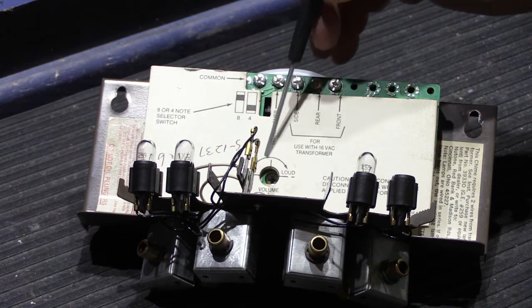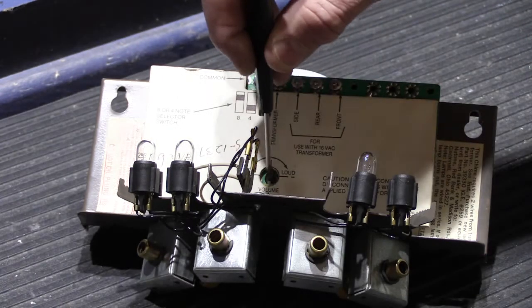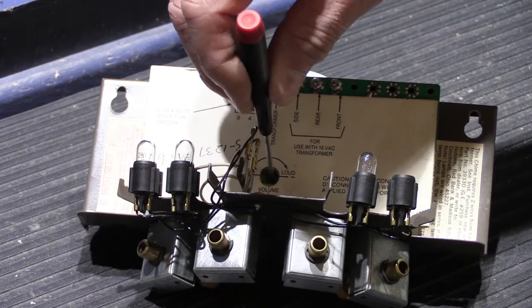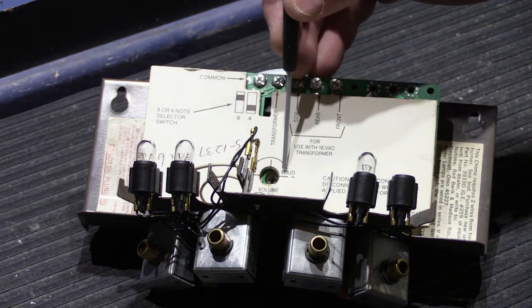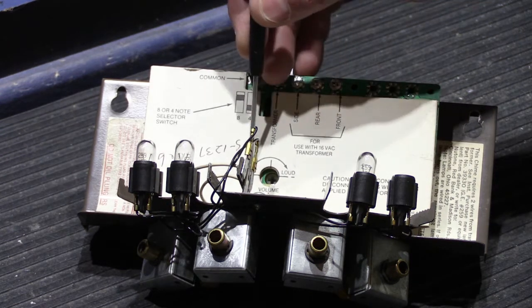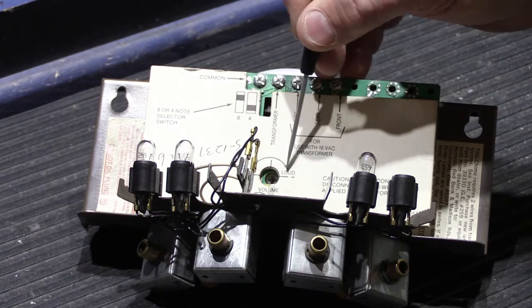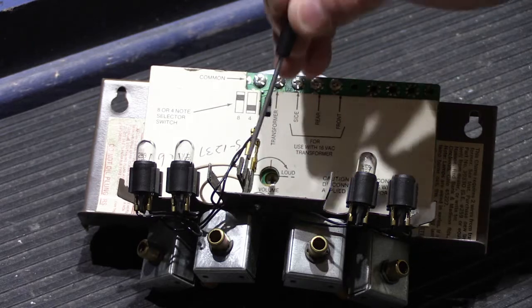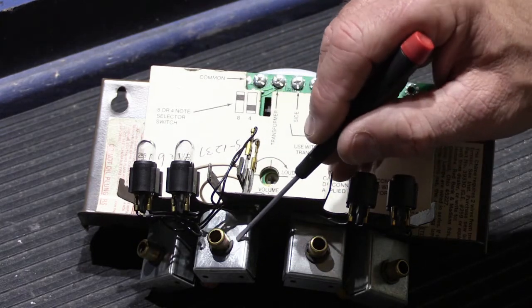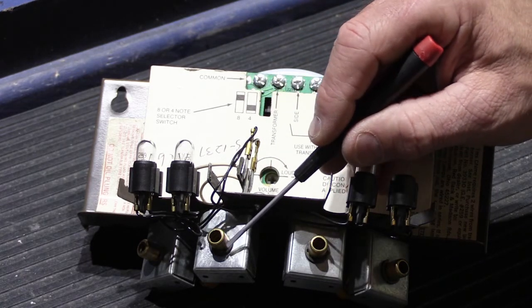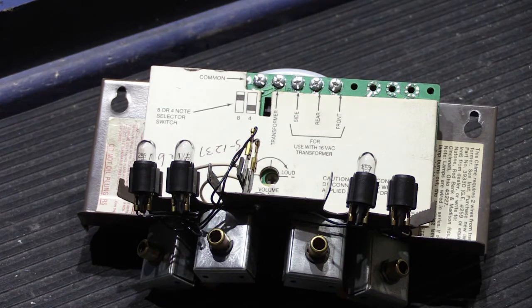There is a volume adjustment down here. There's a cutout in the cardboard cover, and then there's an adjustment pot on the board. You can adjust it from soft to loud. What you're doing by adjusting this is changing the amount of voltage that the solenoids receive, therefore adjusting how hard the plungers pop out and hit the tubes. That's really all there is.